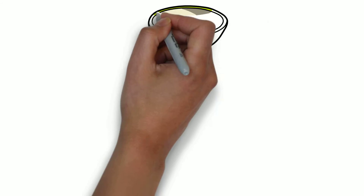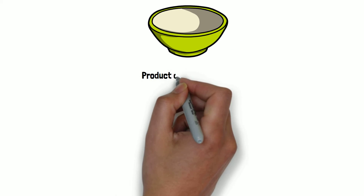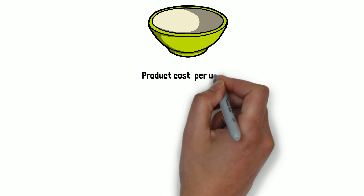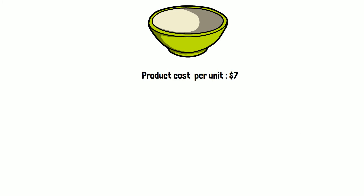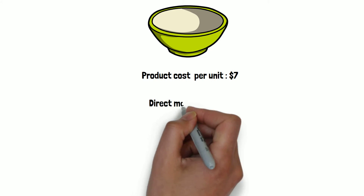I will talk about fixed manufacturing overhead. Let's use one example — this is the bow, and the product cost is $7 per unit.